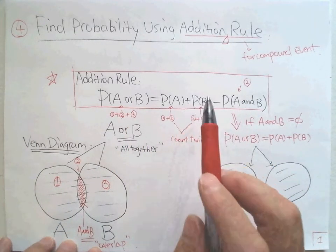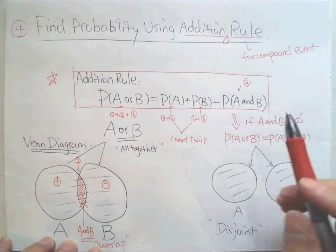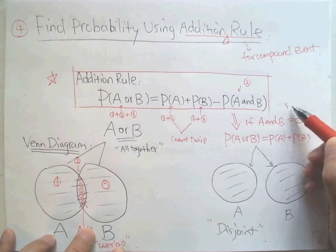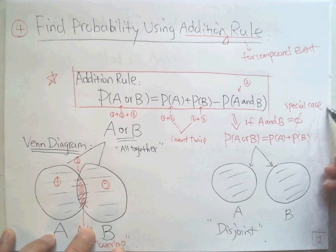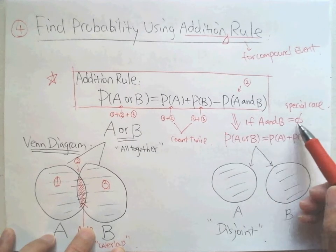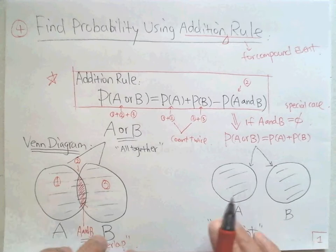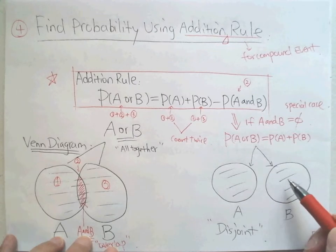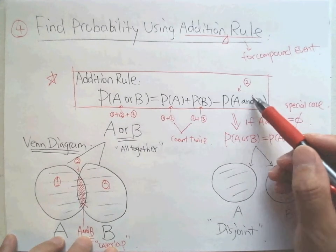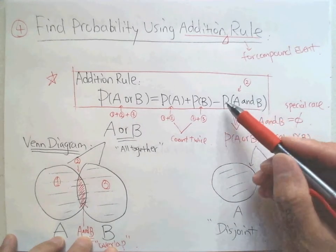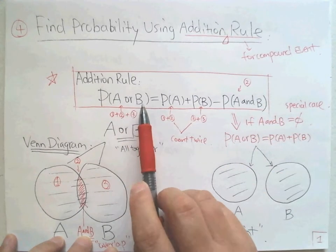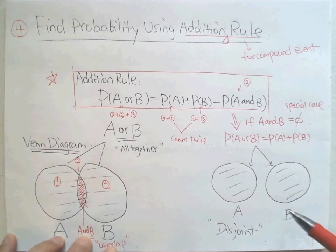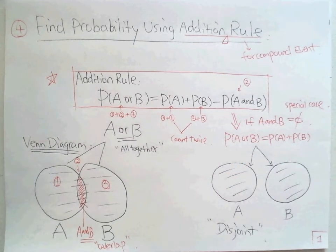We can use this formula to calculate any probability. Now look at the special case: when A and B equals the empty set — meaning A is separated from B — we usually call this 'disjoint.' Disjoint means A and B have nothing in common, so the probability of A and B is zero. Minus zero means nothing, so the probability of A or B simply equals the probability of A plus the probability of B. That's the special case: for disjoint events, just add the two together.